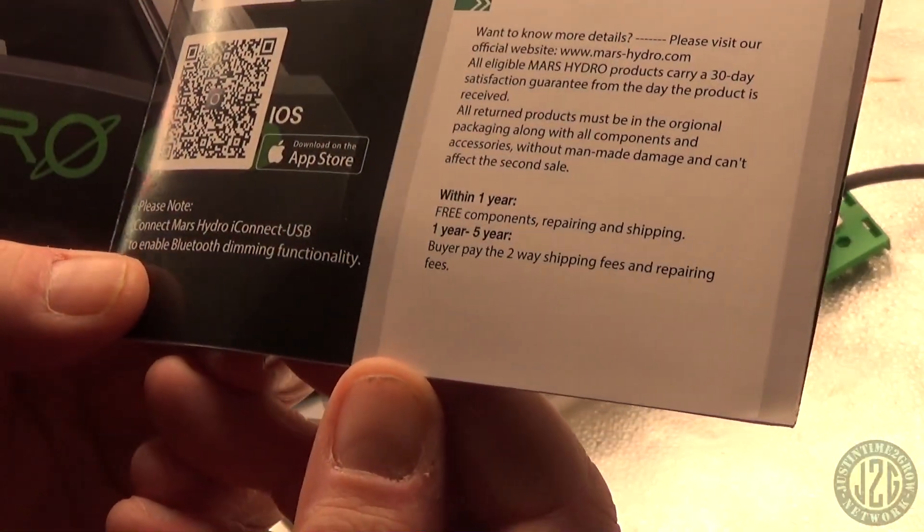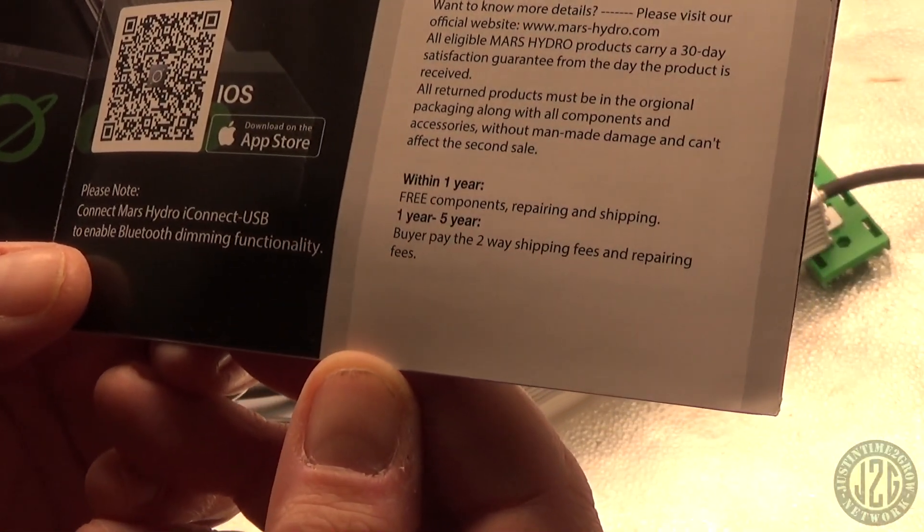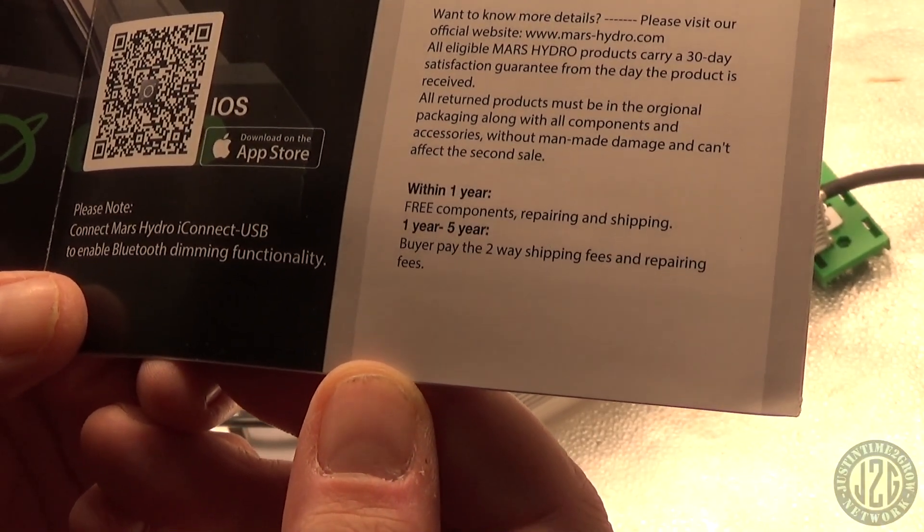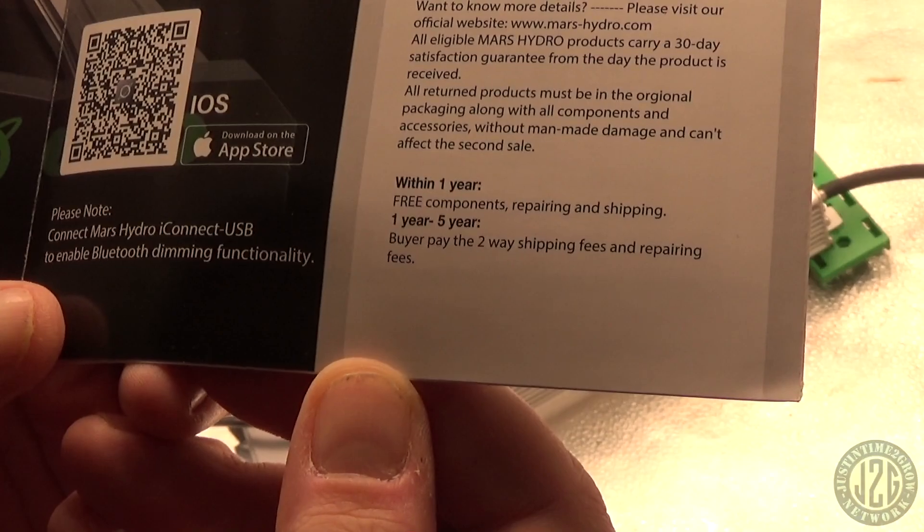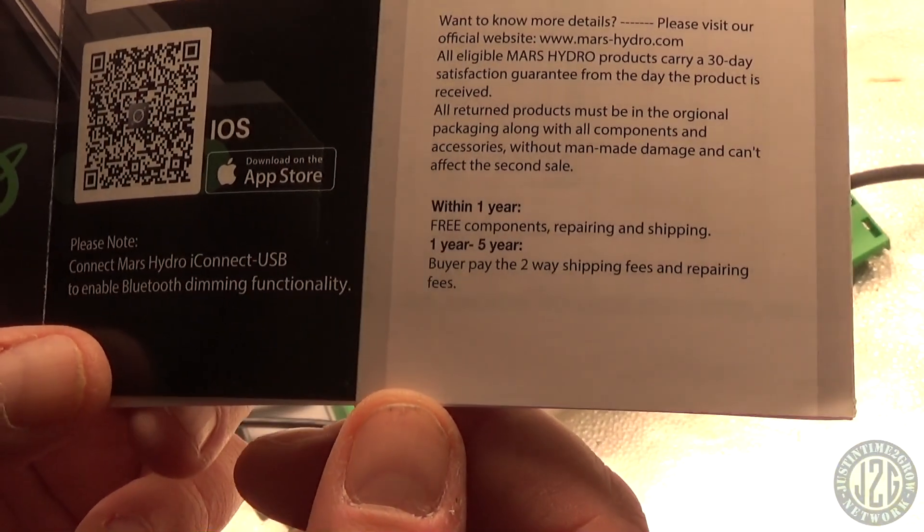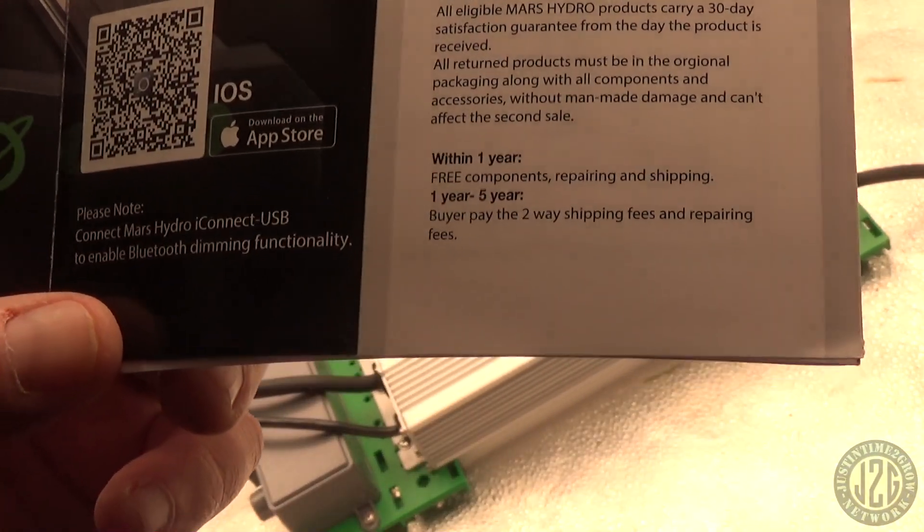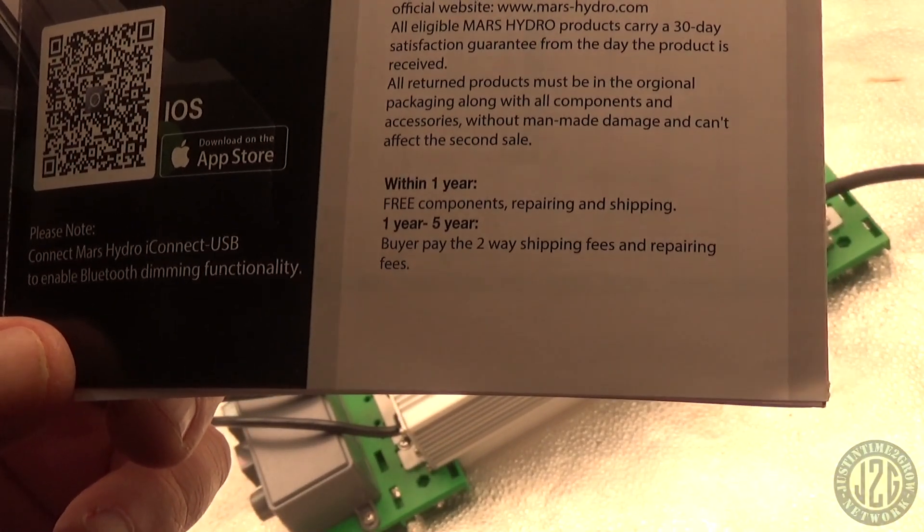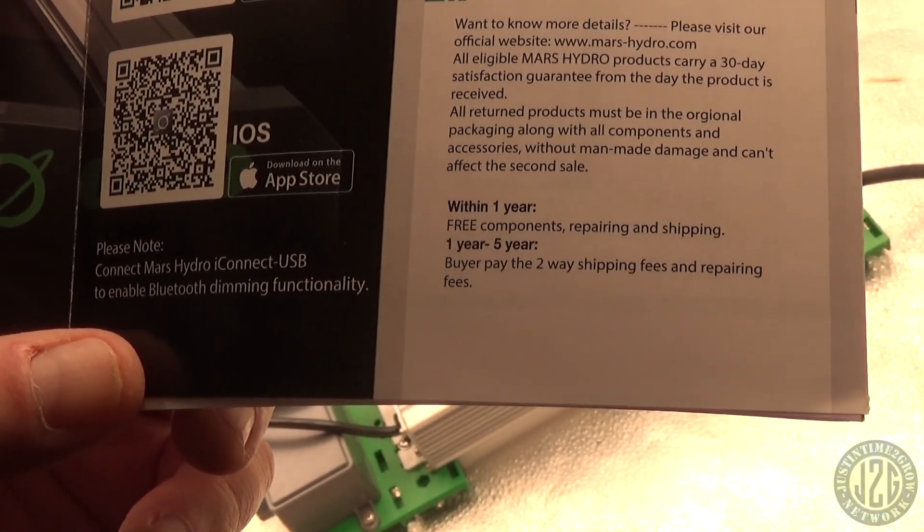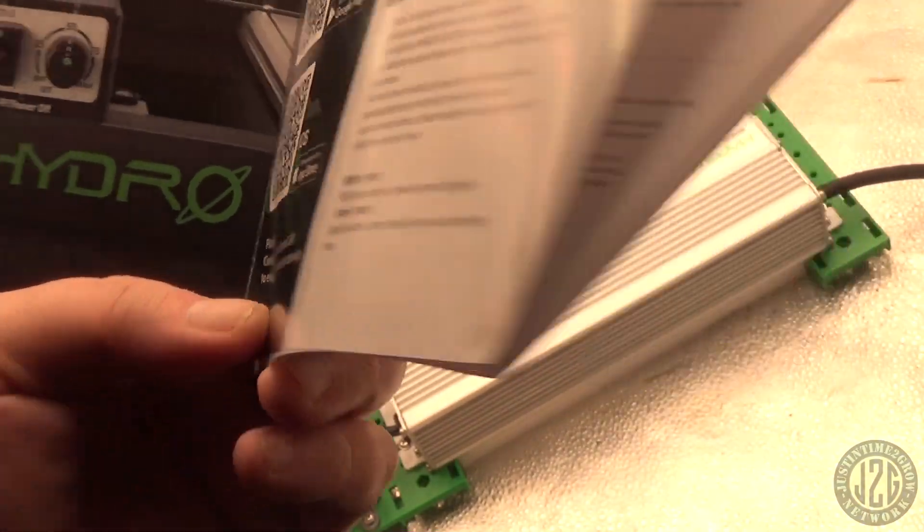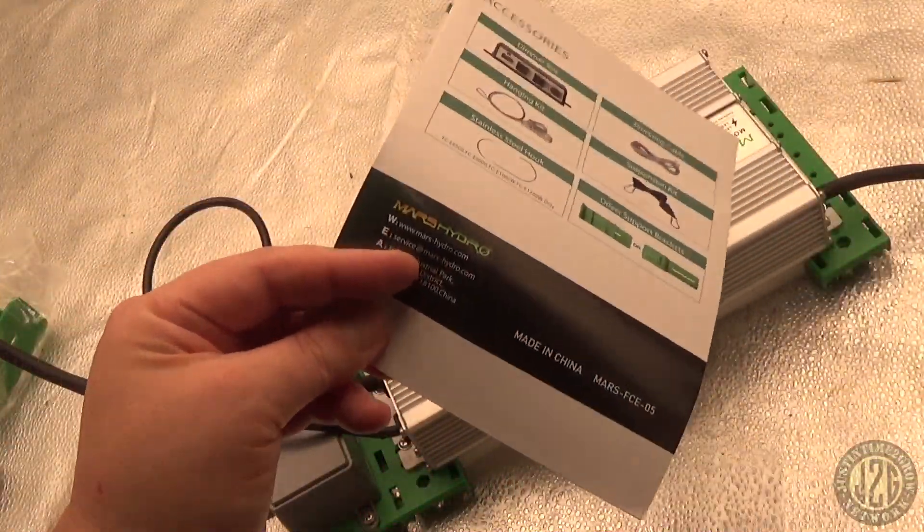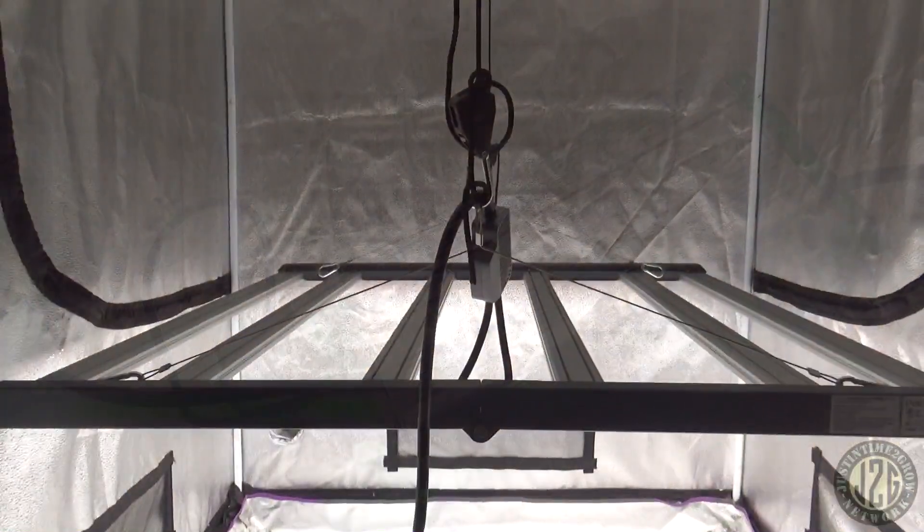But yeah, I guess I'll probably show what's in the rest of it. The warranty here basically tells a little bit about it at the bottom: within one year free components, repairing, and shipping, which is actually pretty good. Within one year. And then one to five years, buyer pays two-way shipping fees and repairing fees, so they'll pay the parts. So I would consider this a one-year warranty honestly. That's not a bad one-year warranty. Free components, repairing, and shipping in the first year. That's actually better than what they used to do.